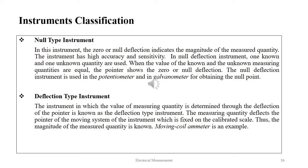The analog device is further classified into null type and deflection type. In the null type instrument, zero or null deflection indicates the magnitude of the measured quantity. This instrument has high accuracy and sensitivity. One known and one unknown quantity are used; when the values are equal, the pointer shows null deflection. The null deflection instrument is used in potentiometers and galvanometers for obtaining the null point. In the deflection type instrument, the value of the measuring quantity is determined through the deflection of the pointer on a calibrated scale. The moving coil ammeter is an example of a deflection type instrument.